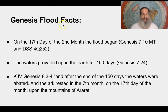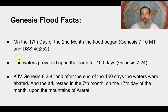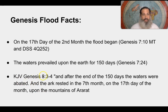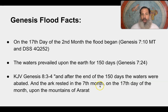The Genesis Flood facts: on the 17th day of the second month, the flood began — according to Genesis 7:10 in the Masoretic text and confirmed by Dead Sea Scroll 4Q252. The waters prevailed upon the earth for 150 days, per Genesis 7:24. And again, Genesis 8:3-4 says after the end of the 150 days, the waters abated and the ark rested on the 17th day of the seventh month upon the mountains of Ararat.